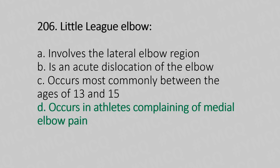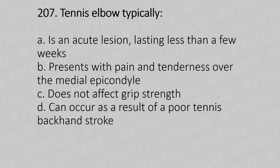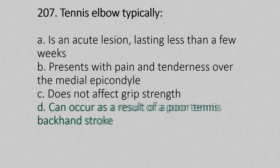Question 207: A tennis elbow typically — Option A: Is an acute lesion lasting less than a few weeks. Option B: Should be present with pain and tenderness of the medial epicondyle. Option C: Does not affect grip strength. Option D: Can occur as a result of poor tennis backhand stroke. The answer is Option D: Can occur as a result of poor tennis backhand stroke.